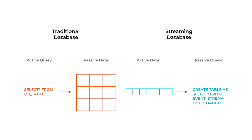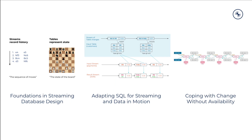When applications want to read query results, they can look at all the ways the result has changed over time — something a traditional database can't do. If you're familiar with Kafka, you can probably take a guess at the basics of how a streaming database works. But what else needs to be solved to get it right?